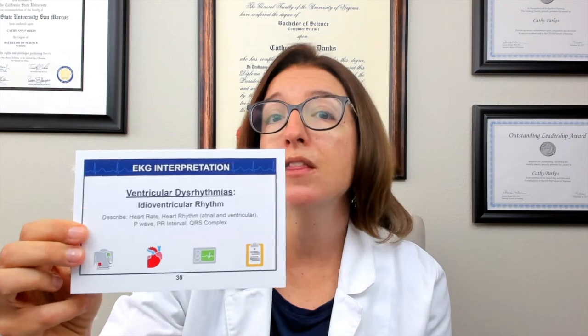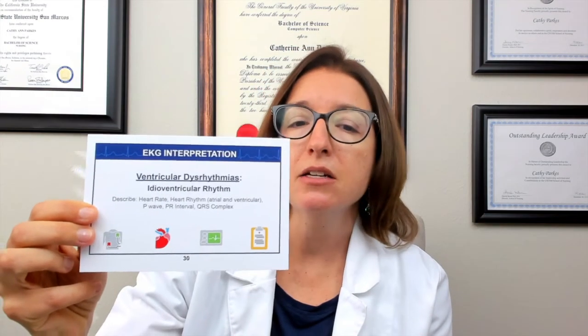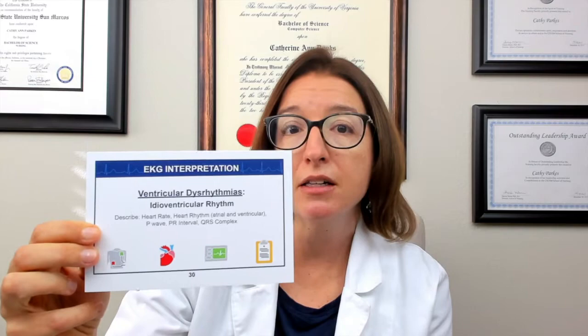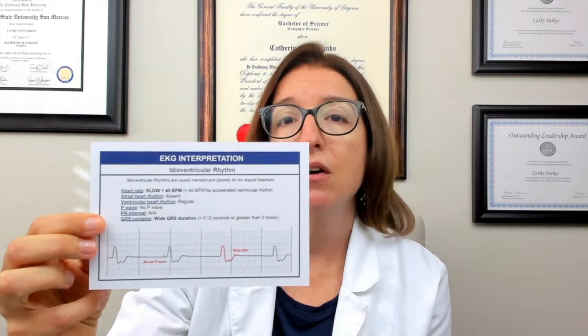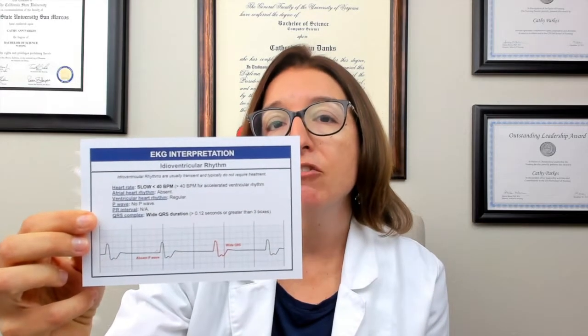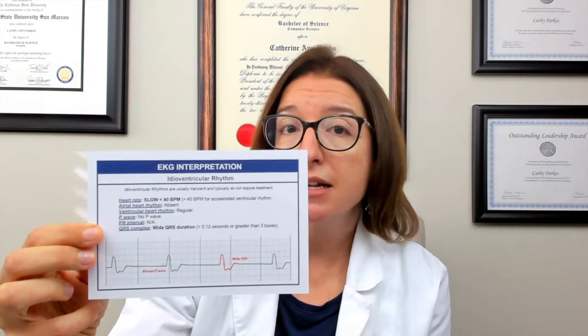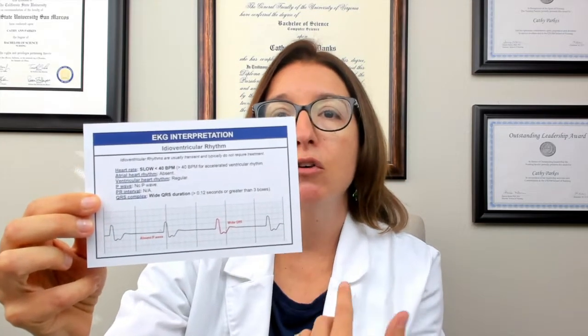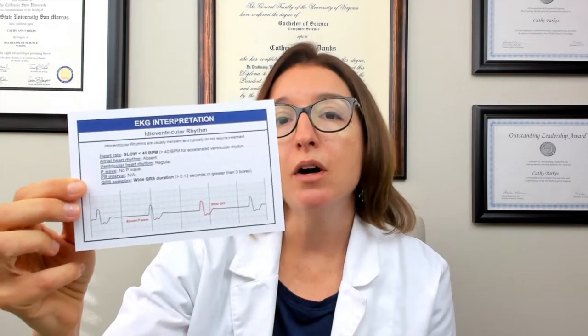To give you a feel for another card, this is one of the dysrhythmias cards that deals with ventricular dysrhythmias, specifically idioventricular rhythm. You can see on the back here it gives you information about the heart rate, the rhythm, the P-wave, PR interval, as well as the QRS complex. And then it gives you a graphic below to help you understand what that looks like.